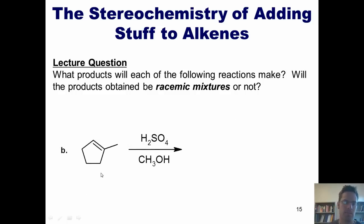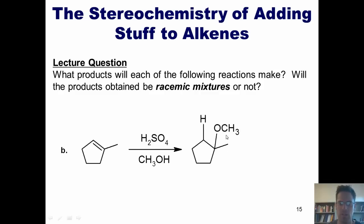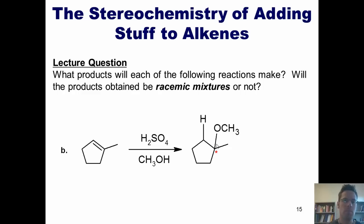Here's another problem. I have cyclopentene being treated with catalytic acid and methanol. Electrons come out and place a hydrogen at the less substituted carbon up at the top, leaving me the tertiary carbocation in the middle. The oxygen then comes in with its lone pairs and forms a bond at that carbon, and the proton attached to that oxygen is removed to ultimately give me an ether. This position right here is a stereocenter. Because I've set up this reaction with only achiral starting material and achiral reactants, I'm going to get both enantiomers in a 50-50 mixture.